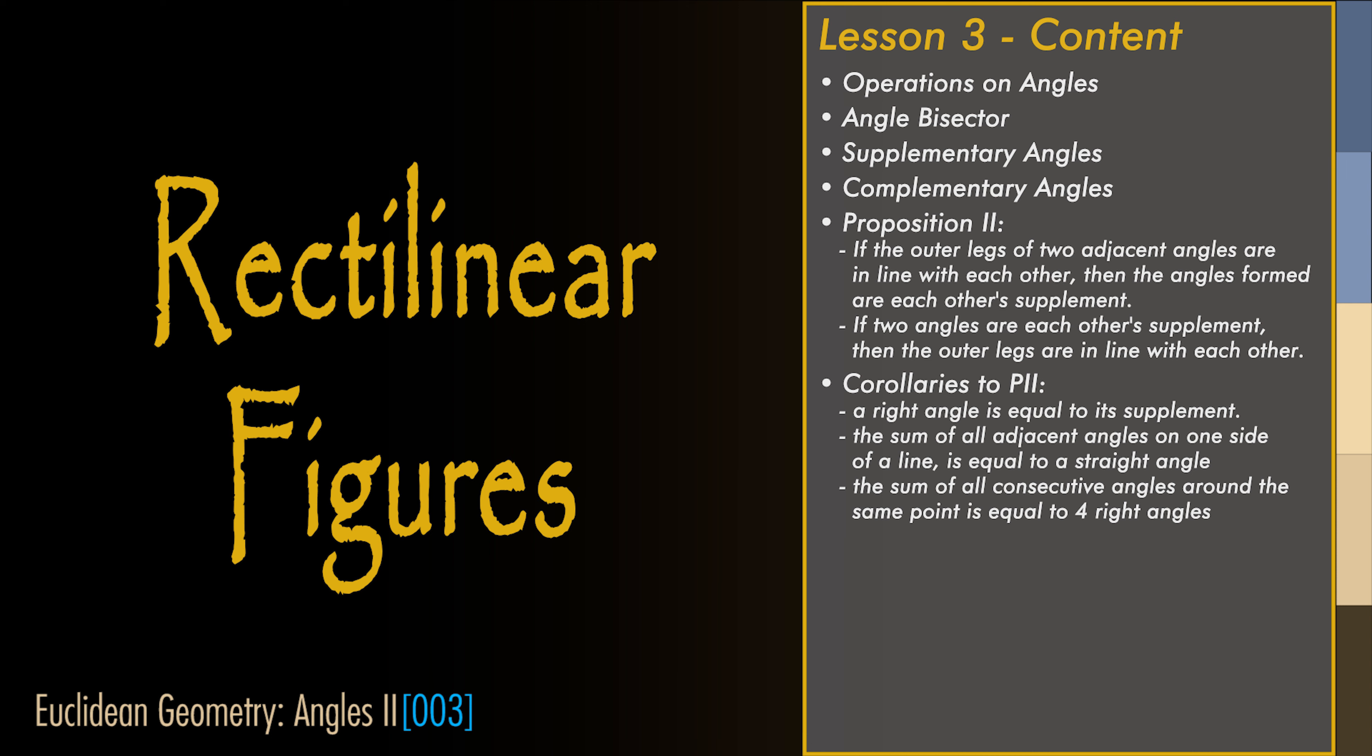Hi. Welcome to the Euclidean Geometry 101 course. This is part 3 of the series. We are still in the chapter about angles, and in this part we will continue with defining properties of angles.